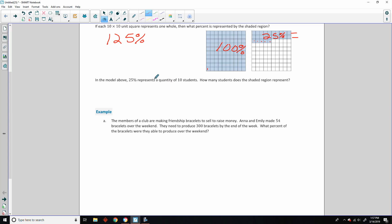So there's 25% shaded over here, so that is a total of 125%. In the model above, 25% represents a quantity of 10 students. How many students does the shaded region represent? Well, what I would do is take that total 125% we have and divide it by 25% to see how many times 25% goes into 125, and it goes five times. So for every 25% there's 10 students, and I have five 25%, then it's 5 times 10, or 50 students.